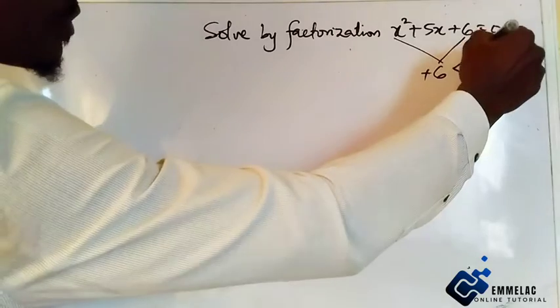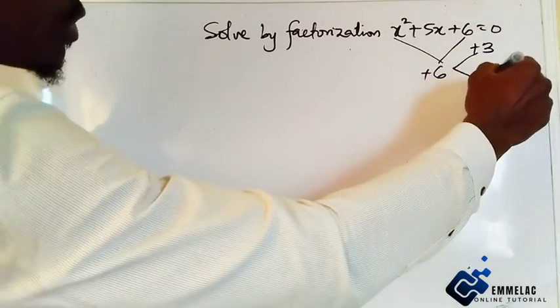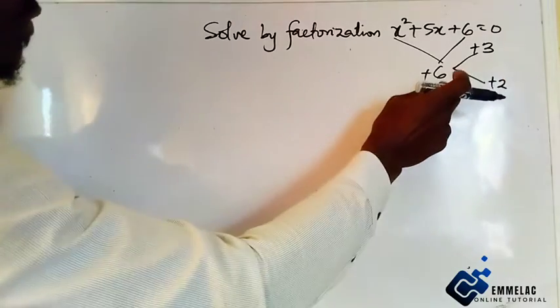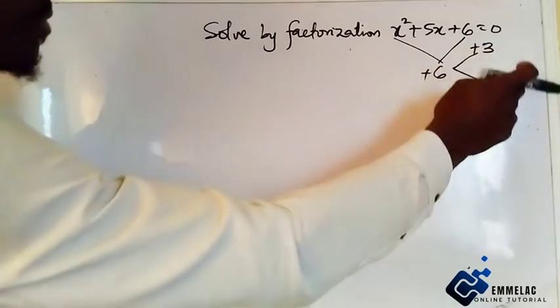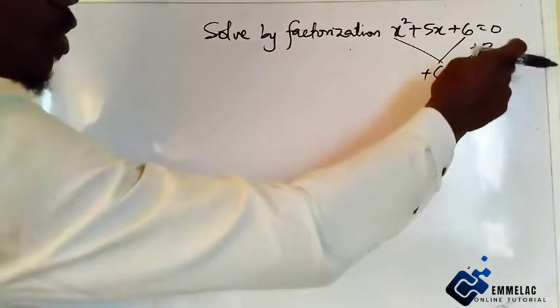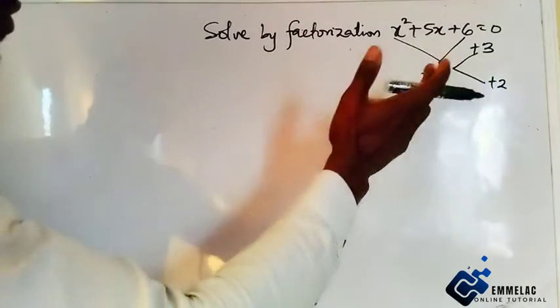Here we have plus three and plus two, which means plus three times plus two will give us six, and the sum of this will give us five.